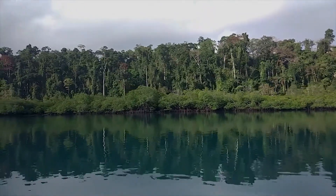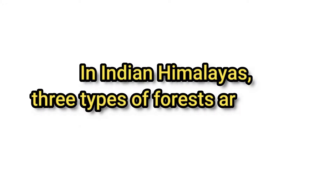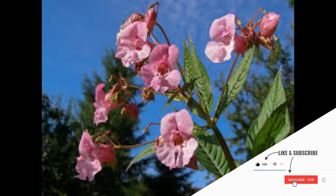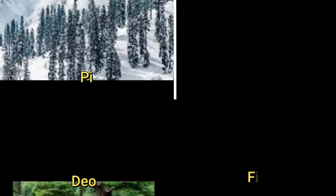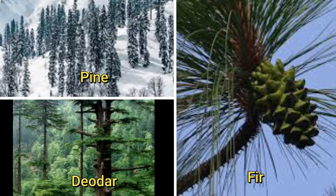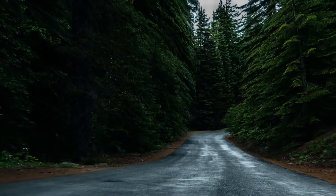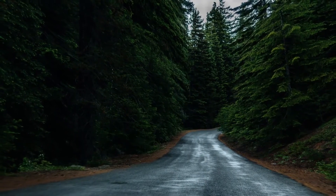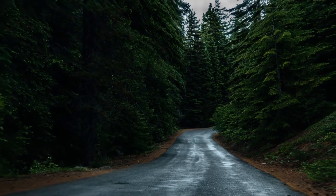The wood of trees in dry areas is oily, light, and durable. In the Indian Himalayas, three types of forests are found according to altitude. At very high altitude, seasonal flowering trees are found. At medium altitude, conifer trees like pine, deodar, and fir are found. At the foothills, a mixed type of forest is found, which includes both conifers and deciduous trees.